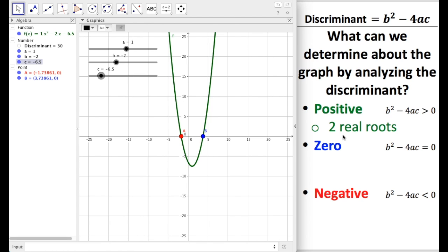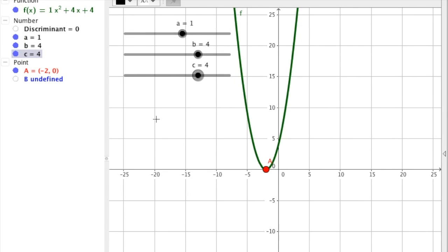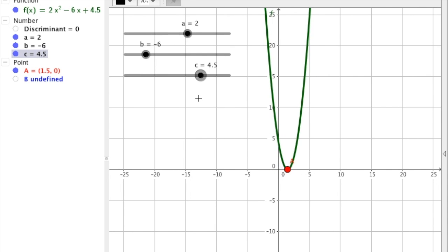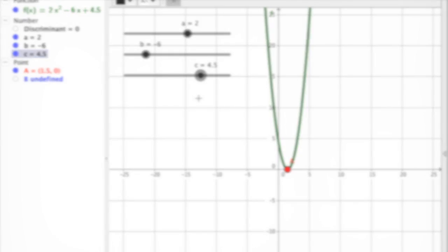Now, what did you notice about all the times when the discriminant was 0? I got a discriminant of 0 when a is 1, b is 4, and c is 4. Then it left me with just one root at negative 2. I got a discriminant of 0 again when a is negative 0.5, and b is 0, and c is 0, and the root is at 0. And lastly, I got a discriminant of 0 when a is 2, b is negative 6, and c is 4.5, with a root at 1.5.